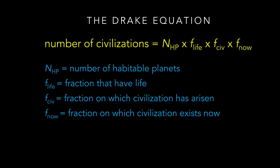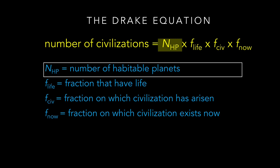We don't know the actual values of any of these terms, but we can make reasonable guesses for at least some of them. Let's start with the first: the number of habitable planets. The statistics of extrasolar planets discovered to date indicate that planets are common, and that many of these planets have sizes and orbits that make them seem likely to be potentially habitable. As a result, it now seems reasonable to suppose that a significant fraction of all stars have at least one habitable planet, in which case there may be 100 billion or more habitable worlds in our galaxy alone.